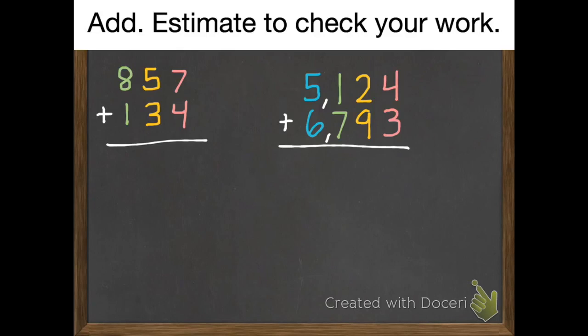Okay, let's start with this first one. Eight hundred fifty-seven plus one hundred thirty-four. Seven plus four is eleven. Carry the one. We have one one left. At our tens column, one plus five plus three is nine. Eight plus one is nine.